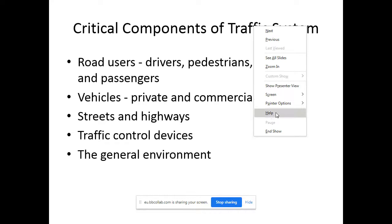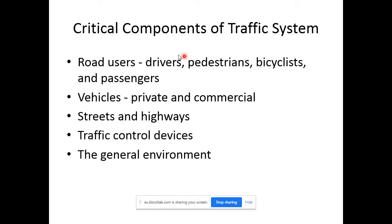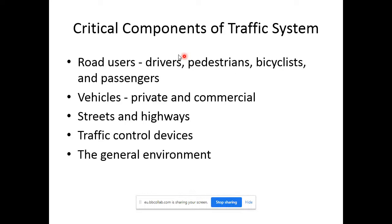Road users are anybody who has to cross or use the road, including pedestrians and vehicle operators. Private vehicles are under your own use — your cars, motorbikes, bicycles — and you can take them anywhere without a fixed schedule. Commercial vehicles are for general use; anybody can use them by hiring or following their route and schedule. For example, a taxi — anybody can hire a taxi — or a bus, which you can use if you follow the same route and timing.